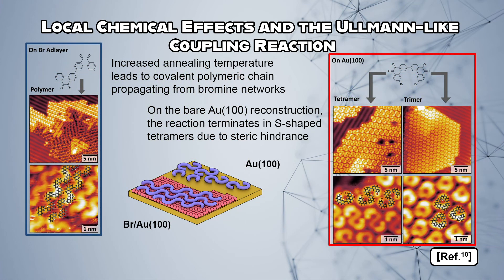With an increase in the annealing temperature, polymeric chains were observed propagating from the bromine networks, while the cis-dimers were found to terminate at S-shaped tetramers due to steric hindrance, suggesting the potential to purposefully use adsorbed leaving groups as a tool to steer bottom-up fabrication methods.